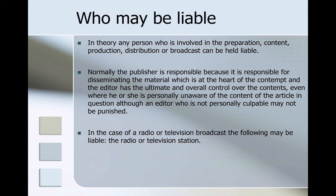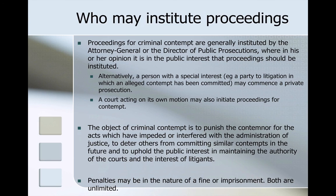Normally the publisher is responsible, as they disseminate the material at the heart of the contempt, and the editor has ultimate and overall control over the contents — even where he or she is personally unaware of the content of the article — although an editor who is not personally culpable may not be punished. For radio or television broadcasts, it is usually the station that will be liable. Proceedings for criminal contempt are generally instituted by the Attorney General or Director of Public Prosecutions where it is in the public interest. A person with a special interest — for example, a party to litigation in which an alleged contempt is being committed — may also commence a private prosecution. A court or judge acting on its own may also initiate proceedings.